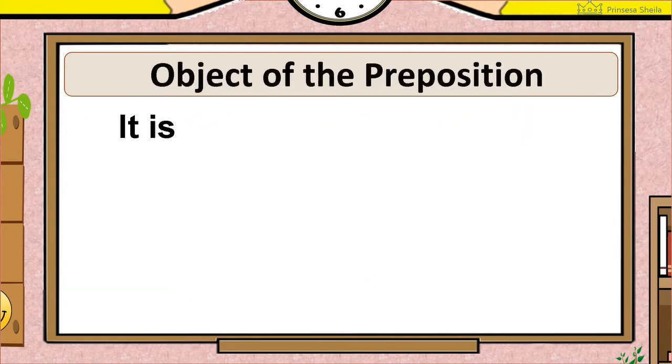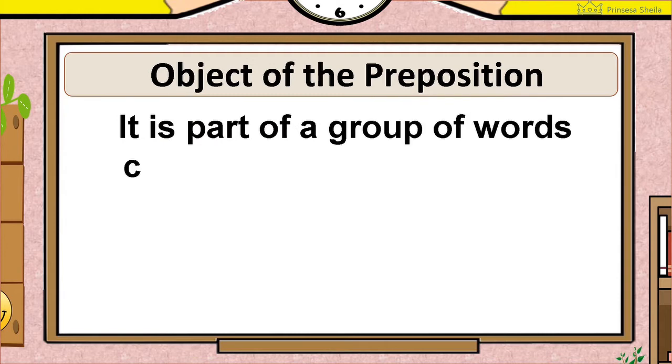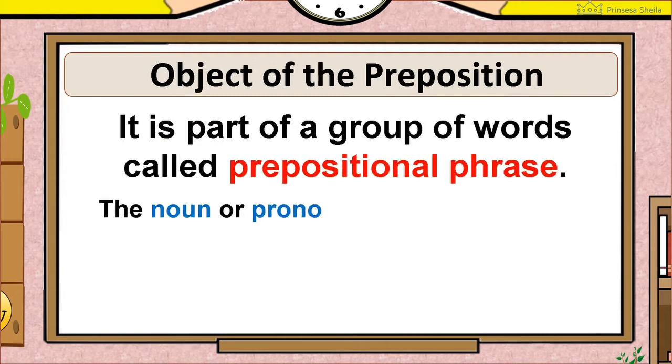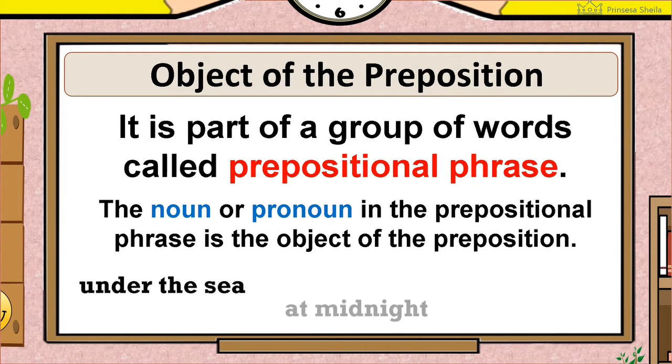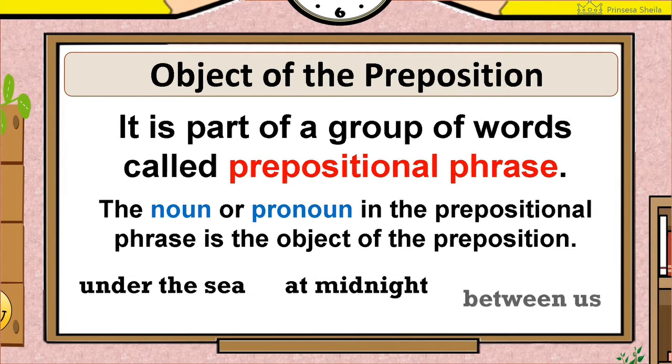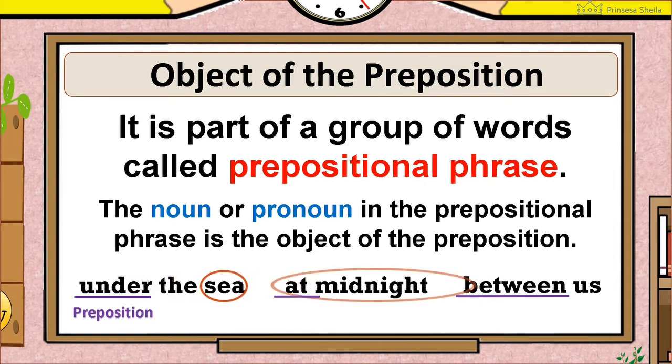The third type is the object of the preposition. It is part of a group of words called prepositional phrase. The noun or pronoun in the prepositional phrase is the object of the preposition. Examples: under the sea, at midnight, between us. The underlined words are the prepositions, while these words are the objects of the preposition.